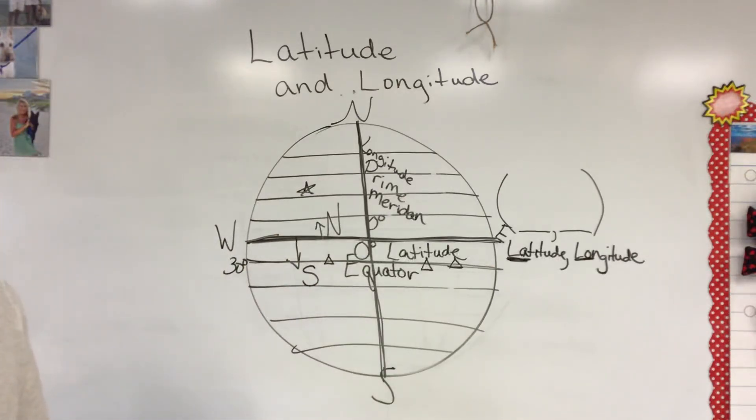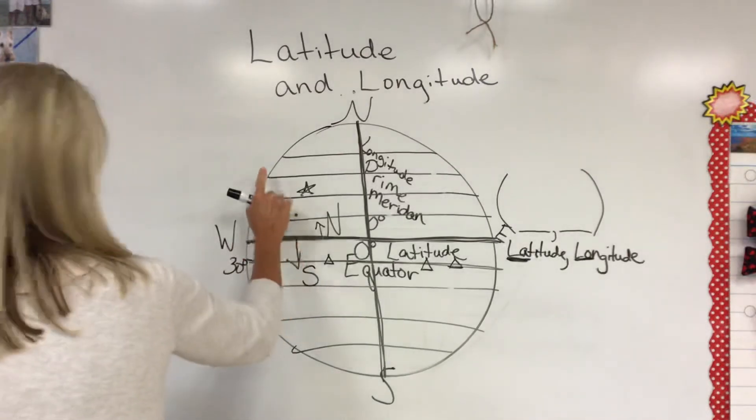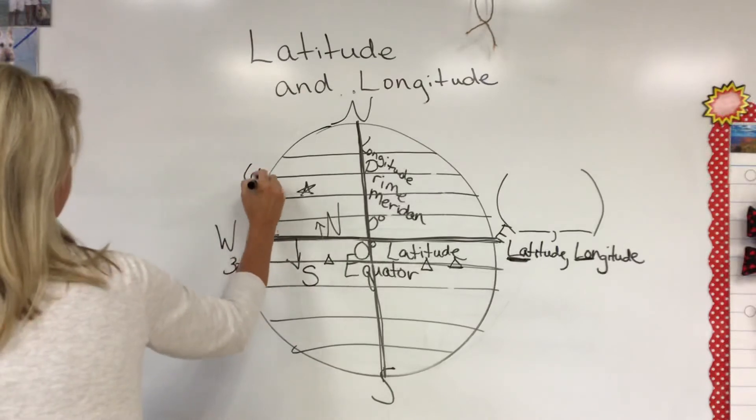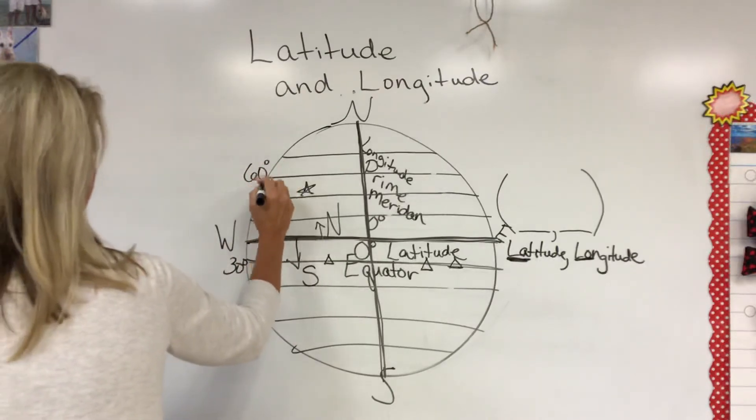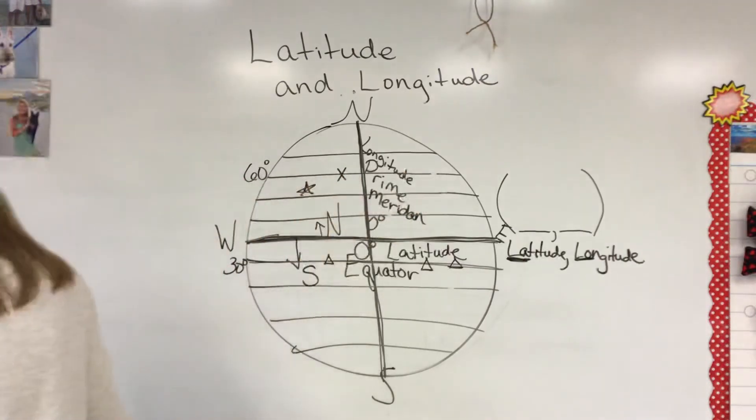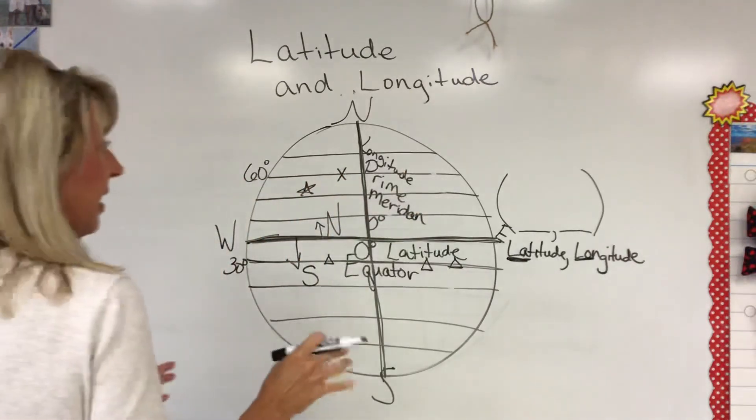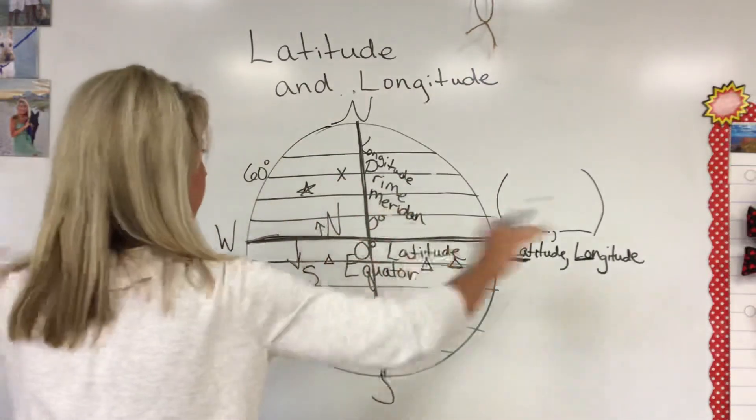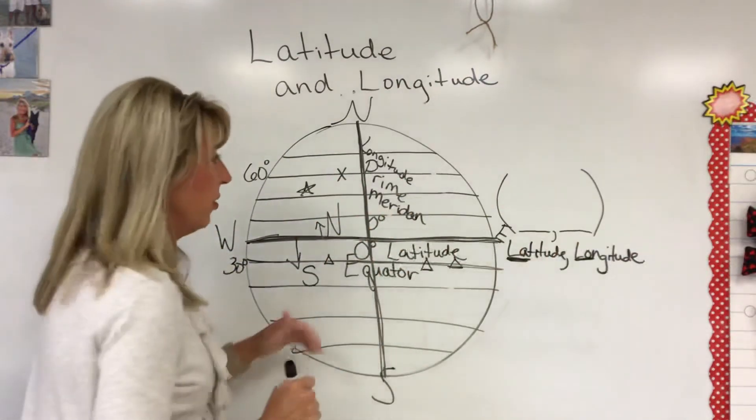Then it asks you to put an X on the latitude at 60 degrees north. So let's say this is it, you would come over and you would put an X somewhere on this line. Remember any time they ask you about latitude you're thinking lines that go this way, flatitude, parallel.